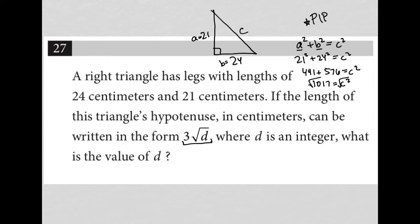I square root both sides, and here's where things get a little bit tricky. So if I square root 1017, I'm going to get a decimal. But I know that the square root of 1017 should equal 3√d.